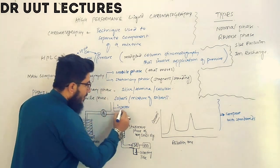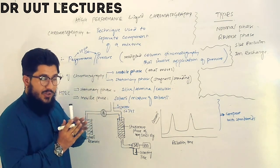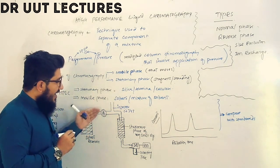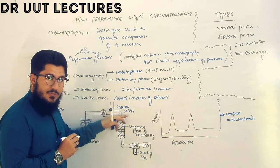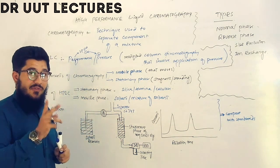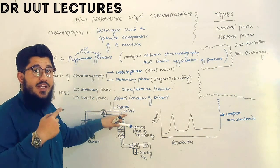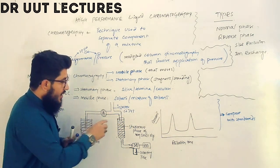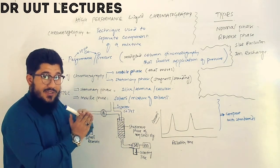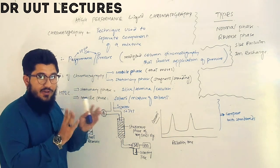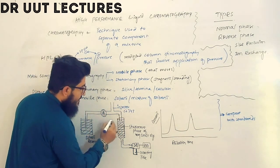Consider we have one, two, three, four, five components in our mixture — this is the sample we are going to separate into components. The mobile phase will carry this mixture with itself, and as the mobile phase moves through the stationary phase, the mixture will start separating. Separation is driven by two main factors: the mobile phase and the stationary phase. Components with high interaction with the stationary phase move very slow, while components with high interaction with the mobile phase elute out fast.